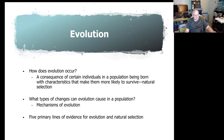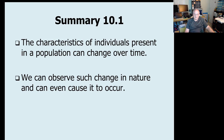To summarize: characteristics of individuals present in a population can change. The only reason this change occurs is that DNA allows it. If DNA replication and maintenance were perfect, there would be no evolution because there would be no changes. But because there are mistakes and changes in DNA, we can actually observe what we call evolution.